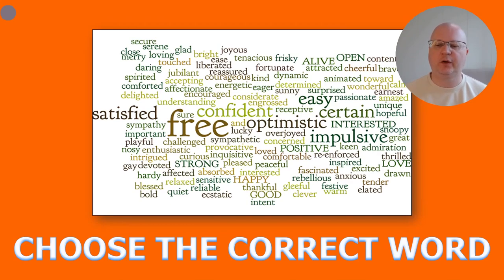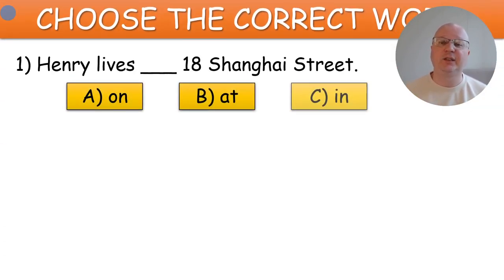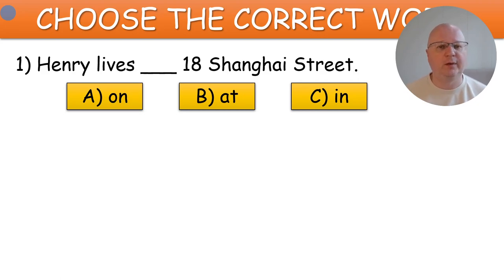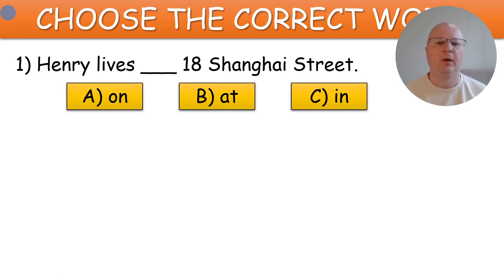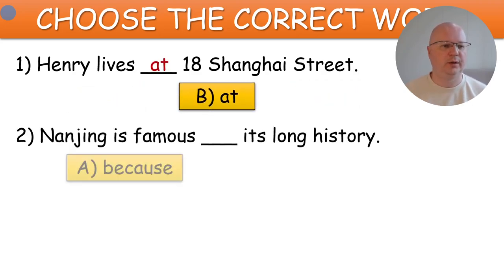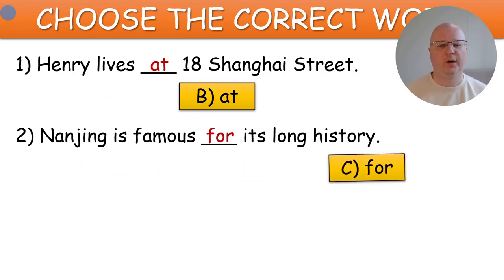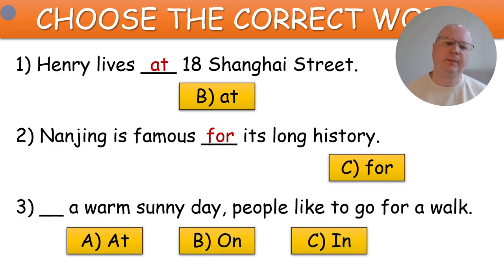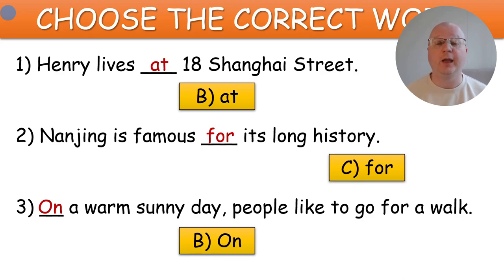Next exercise: Choose the correct word. This is a grammar exercise. Students need to choose the correct word. It can be done as a group activity, in pairs, or as a whole class activity — you can display the sentences on the board and students copy them into their notebooks. Every teacher and classroom setting is different, so you can be creative with it. For example: Henry lives at 18 Shanghai Street. Nanjing is famous for its long history. On a warm sunny day, people like to go for a walk.